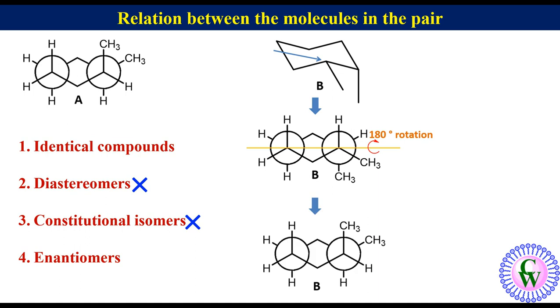Now, if we compare A and B, we will find that both are identical compounds. So, these are not enantiomers but identical compounds.